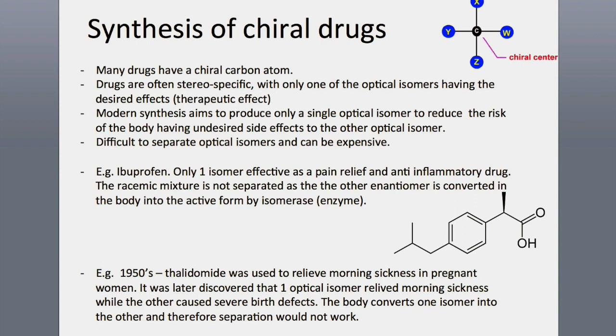I have two examples here. The first one is ibuprofen. Only one of the isomers of ibuprofen is actually effective as a pain relief and anti-inflammatory drug. When you buy ibuprofen from the pharmacist, the tablet comes as a racemic mixture and the two isomers are not separated. That is because the other enantiomer is converted in the body by isomerase, which is a biological enzyme, into the active form. Therefore, there is no need to separate the two isomers in this case.